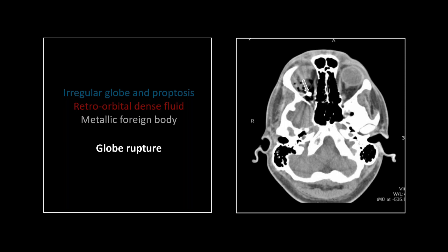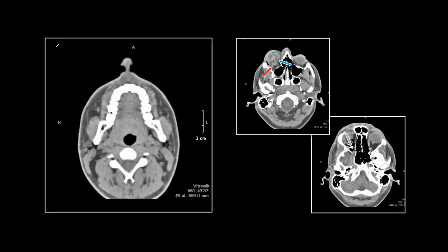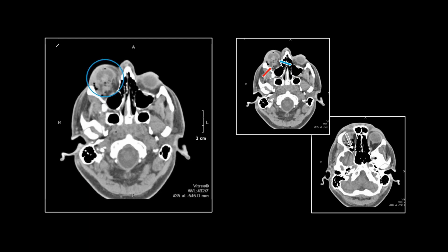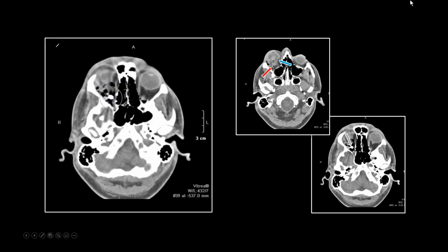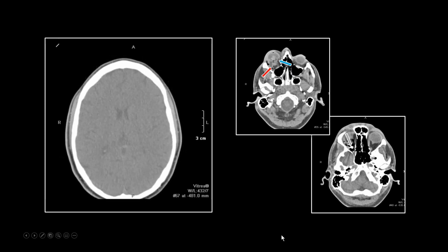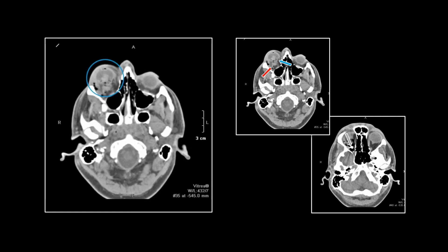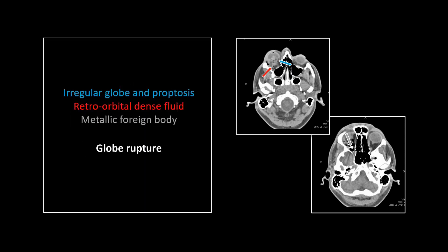Higher up, you can see the culprit. Obviously, you'll shoot your eye out — we all know how dangerous these things are, even without the movie. And a nice example of that globe distortion, the buckling there at the back aspect of it, clearly denoting a rupture. The lens really took it directly, it looks like. There's really no lens tissue remaining. That's a globe rupture.